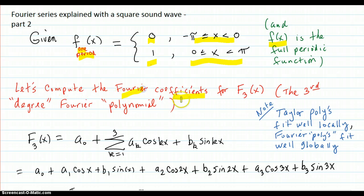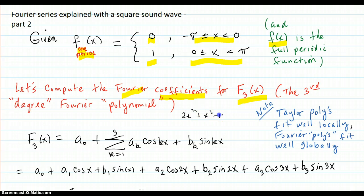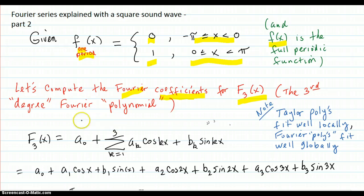Let's compute the Fourier coefficients for f3, which is the third degree Fourier polynomial. Now it's not really a polynomial, because polynomials look like this type of thing — that's a polynomial — so it's not that type, and there's really no degree to this. But just like Taylor polynomials, it follows a similar kind of structure and layout, so that's why we call them that.